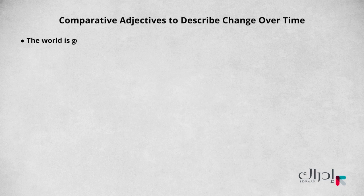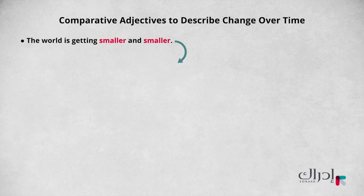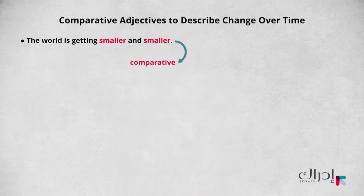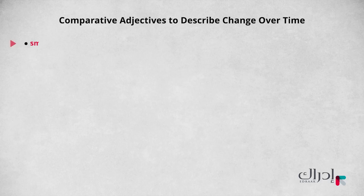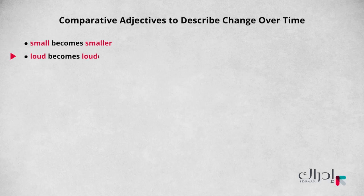In the sentence 'the world is getting smaller and smaller,' the word 'smaller' is a special kind of adjective called a comparative. You have probably learned about comparatives before. Most comparatives are formed by adding an -er ending to a word. For example, 'small' becomes 'smaller' and 'loud' becomes 'louder.' But there are different rules for different word types.